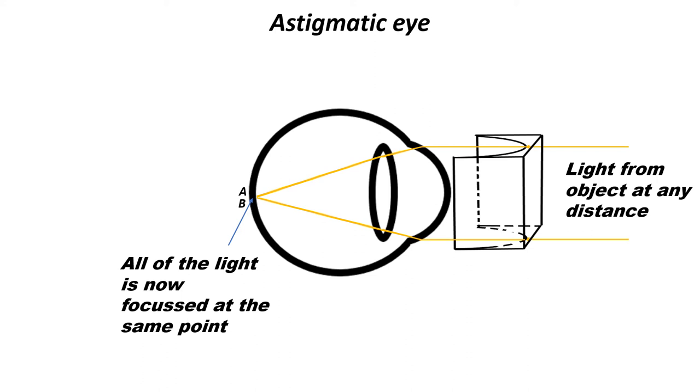All of the light is now focused at the same point as it would be in an eye that does not have astigmatism.